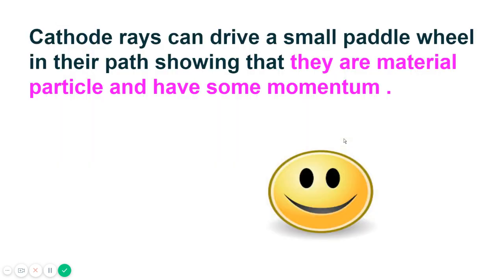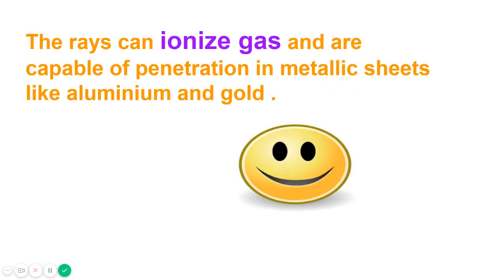Cathode rays can drive a small pedal wheel in the path, showing that they are material particles and have some sort of momentum. The rays can ionize gas and are capable of penetration in metallic sheets like aluminum and gold.